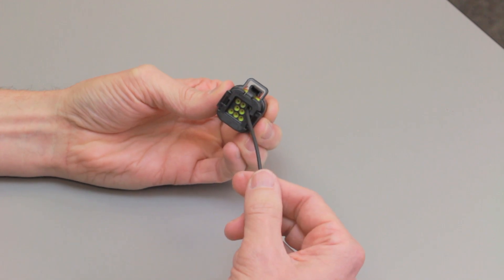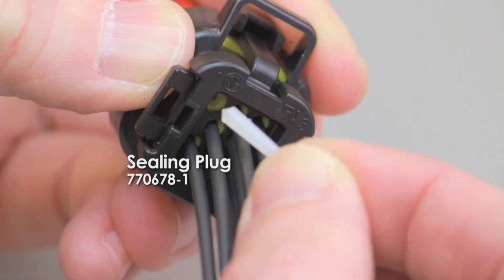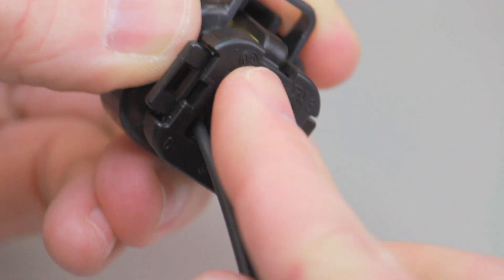Repeat this process until all of the cavities are filled. If an empty contact cavity is accidentally pierced, insert sealing plug 770678-1, large end first, into the contact cavity as far as it will go to reseal it.